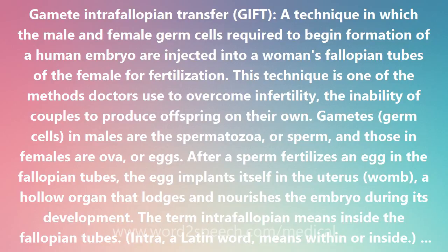Gametes, or germ cells, in males are the spermatozoa, or sperm, and those in females are ova, or eggs. After a sperm fertilizes an egg in the fallopian tubes, the egg implants itself in the uterus, or womb, a hollow organ that lodges and nourishes the embryo during its development.